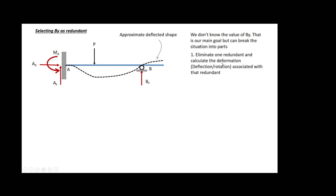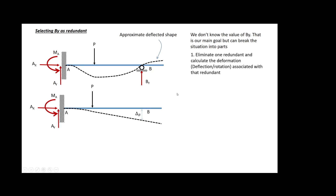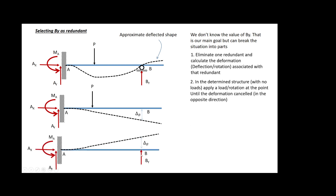We don't know the value of By, and this is our main goal. Let's break this into parts. First, eliminate one redundant — in this case we eliminate By. It could be a deflection or a rotation. If we're making consistent deflections then we're eliminating forces; if consistent rotation then we eliminate the moment. With only the external load on the reduced structure, we calculate the deflection at B.